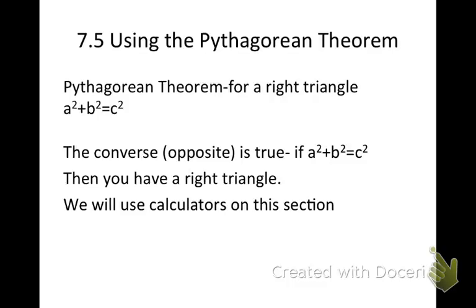We're going to look at Section 7.5 of Chapter 7, which is using the Pythagorean Theorem. Please write down everything that you see on the screen for this first page. Remember, if I go too fast, you can pause me. If I go too slow, you can fast-forward me, but I don't recommend that. And if you have questions along the way, pause the video, write yourself a note on the side, and we can go over that tomorrow during class.